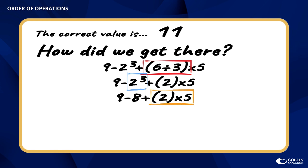Moving on, the orange box highlights the fact that we have multiplication. And there is no division, so we can jump right into it. So 2 times 5 equals 10.